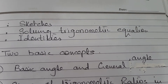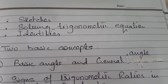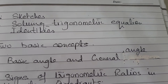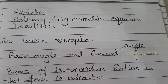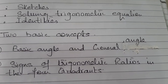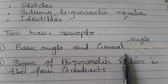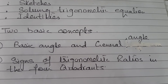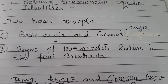So let's start with the basic concept. So far we have learned that trigonometric ratios are applied only on a right angle triangle. Now we will see how it is applied on any triangle. For that you need to understand the concept of basic angle and general angle, and then sine in each quadrant.